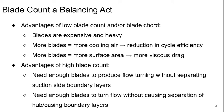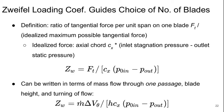The pros and cons. Some kind of balance is generally needed. The Zweifel Loading Coefficient generally guides this and tells us how many blades to choose.